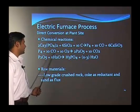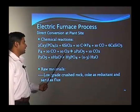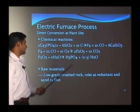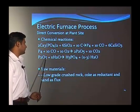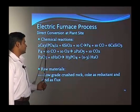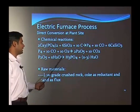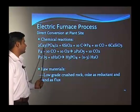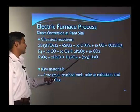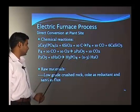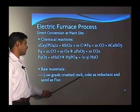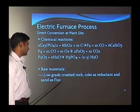Then the phosphorus and carbon monoxide in oxygen give phosphorous pentoxide. Then phosphorous pentoxide reacts with water to give phosphoric acid. So, overall, phosphate rock with sand and coke gives phosphoric acid as the final product. The raw materials are low-grade crushed rock, coke as a reductant, and sand as the flux.